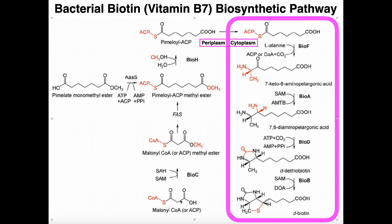Coming from the other starting source, we can also synthesize pimeloyl-ACP through malonyl-CoA, which is generated from acetyl-CoA by acetyl-CoA carboxylase. Another enzyme specific to biotin synthesis, BioC, is going to methylate the carboxyl group on the right side. The methyl donor is, as we would expect, S-adenosylmethionine, giving us malonyl-CoA methyl ester. It's also worth noting that depending on the species, this coenzyme A can actually be ACP.